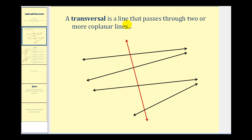A transversal is a line that passes through two or more coplanar lines. So this red line here is a transversal because it intersects these other four black lines. And when a transversal intersects lines, it forms a variety of angles that have special names based upon their locations.